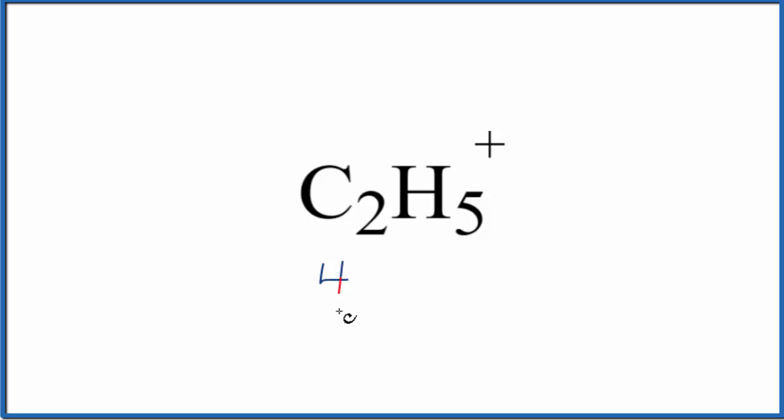Carbon's in group 14, sometimes called 4A, has four valence electrons. We have two of those. Hydrogen's in group 1. We have five hydrogens. And the plus here means we've lost an electron.